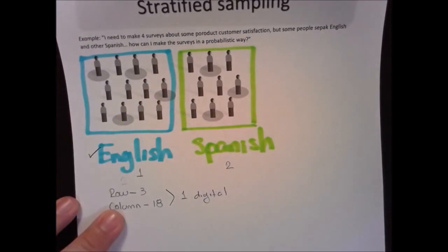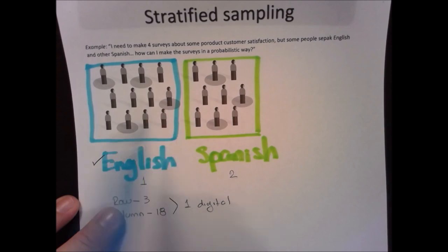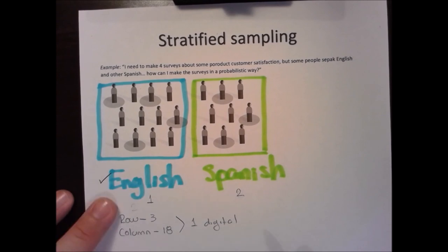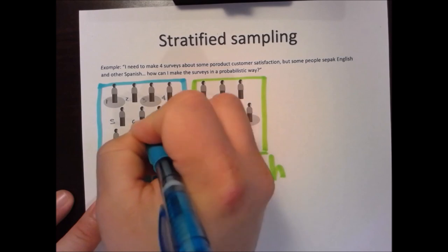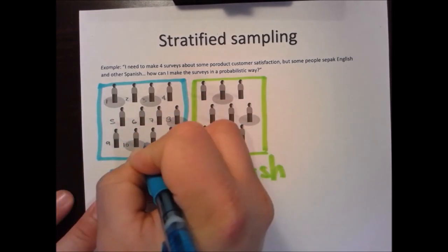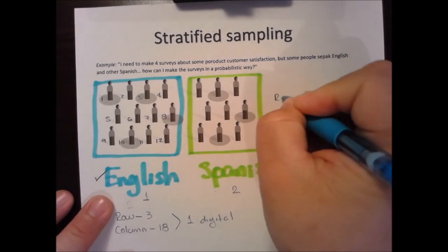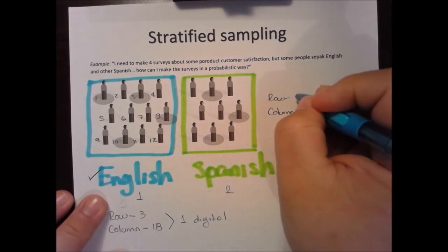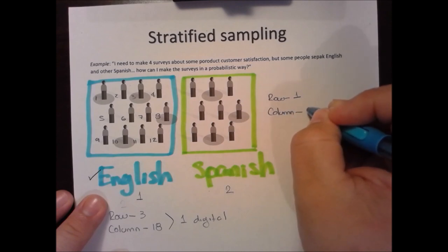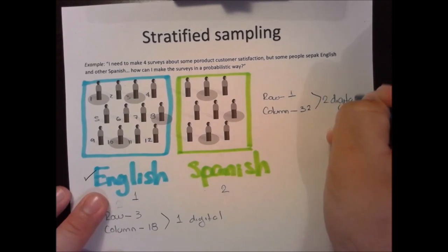We select the people who speak English. Now we label each of the 12 people in that group: 1, 2, 3, 4, 5, 6, 7, 8, 9, 10, 11, 12. For this second part, we select a new row and column — row 1, column 32. We work with two digits since the last label is 12.